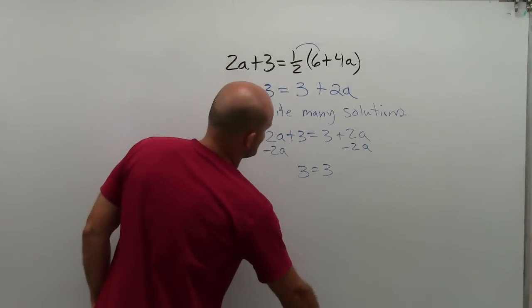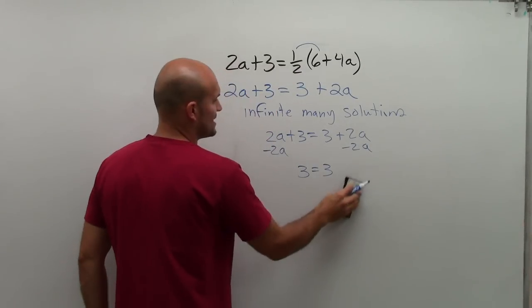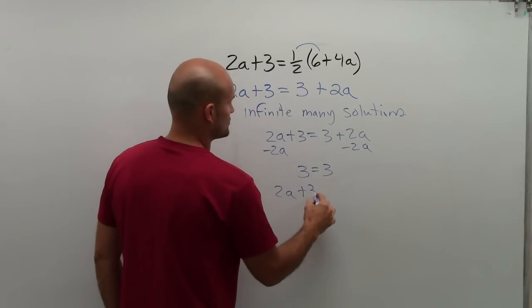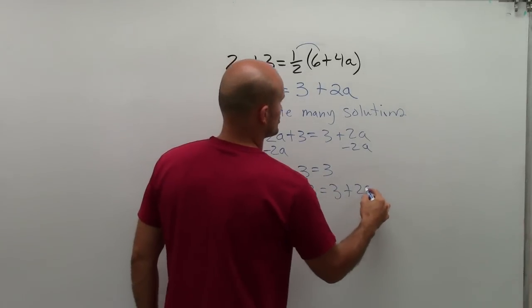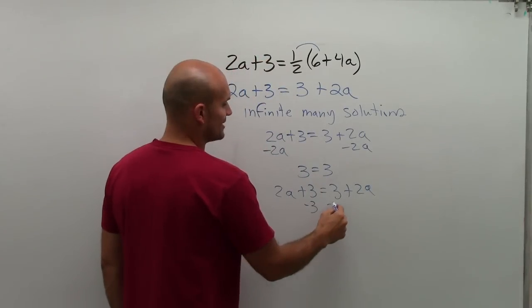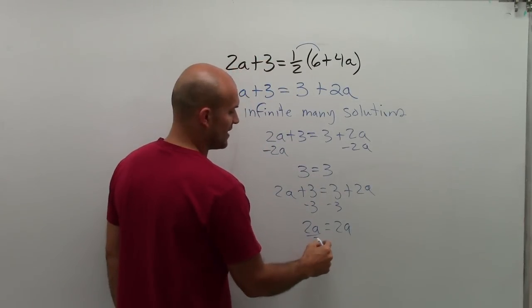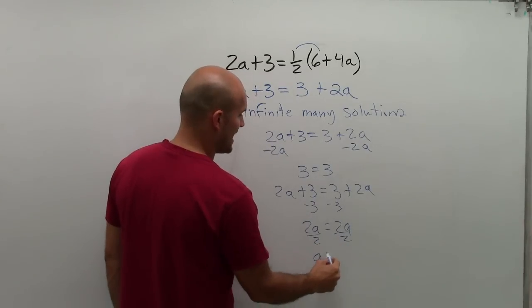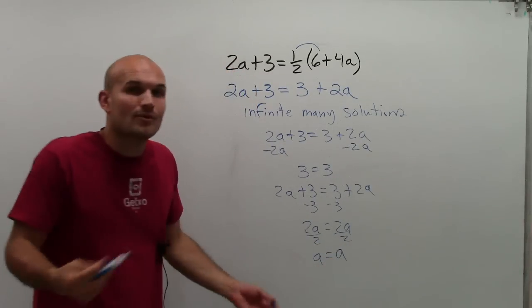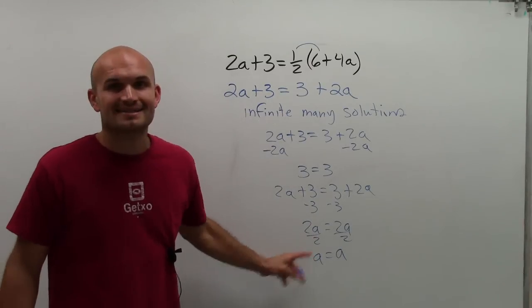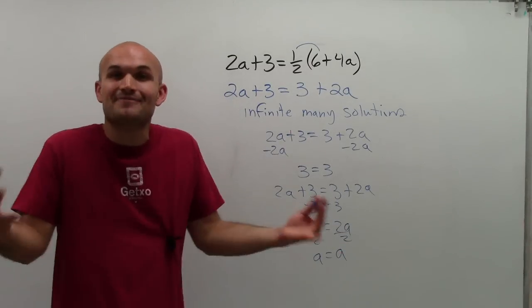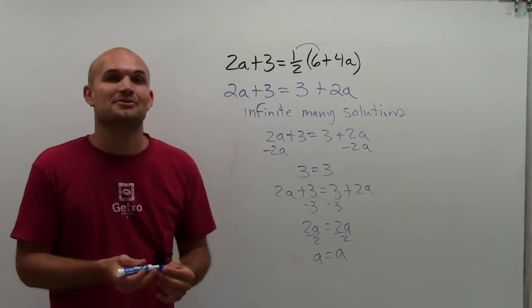Well, what if you just wanted to isolate both variables on both sides? What if you did 2a plus 3 equals 3 plus 2a? And let's say you subtracted the variables. Then you got 2a equals 2a, divide by 2, and you get a equals a. Well, of course, no matter what number you put in for a, it's going to equal a on the other side. So there's infinite many answers for you to get the correct solution.